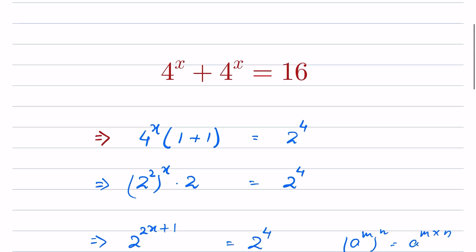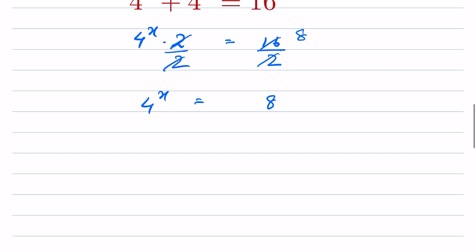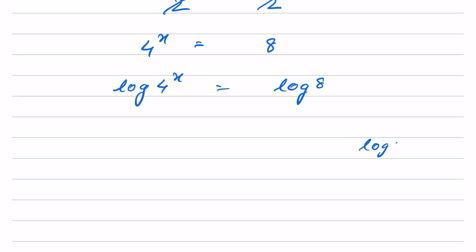We can also solve this using logarithms. We have 4^x times 2 equals 16. Dividing both sides by 2 gives 4^x equals 8. Taking log of both sides: log(4^x) equals log 8. Using the identity log(a^b) = b·log(a), we get x·log 4 equals log 8.